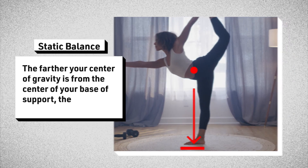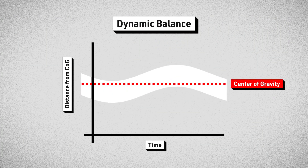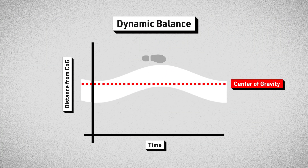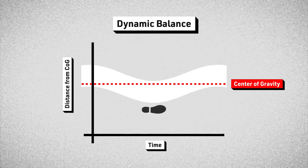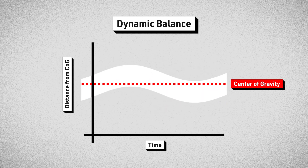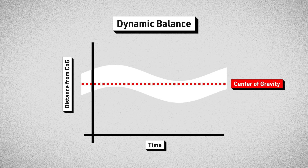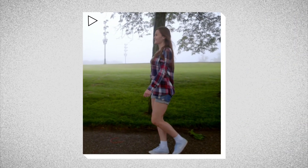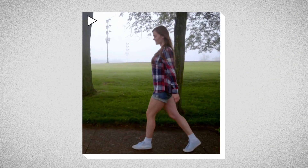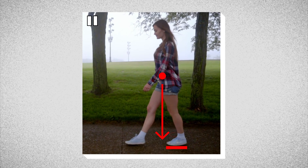We can maintain balance in a dynamic sense as well. The center of gravity can move outside the base of support, but in order to avoid falling, we must be able to synchronize our movements. For example, during gait, as we push off our back leg, we temporarily put our center of gravity outside our base of support.